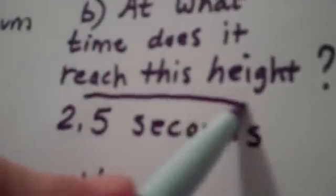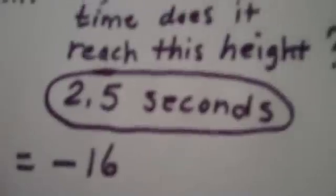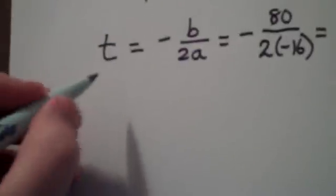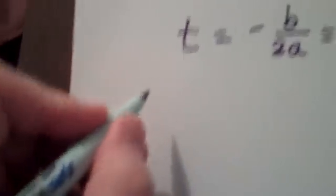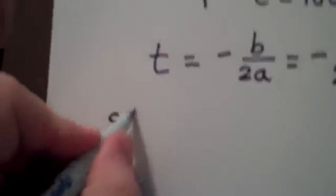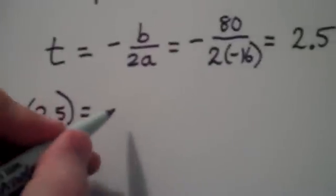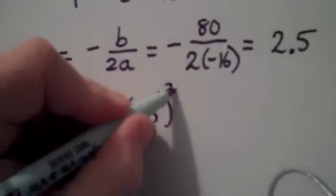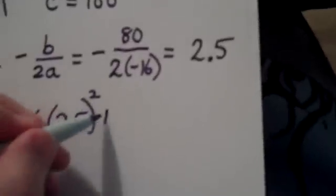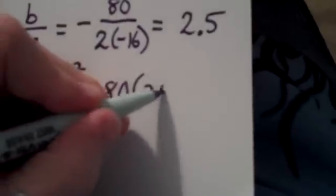Now, if the person asking this question only wanted to know how long it took, we're done. But part A said, what was the maximum height? So in order to find the maximum height, what we need to do is take 2.5 and plug it into the function. So we need to find S of 2.5.